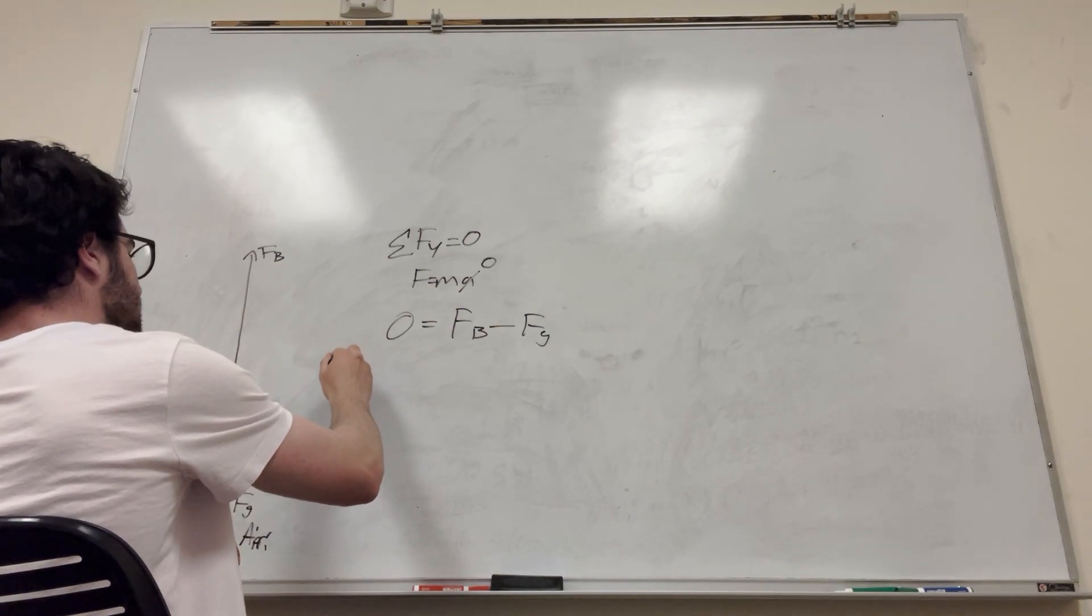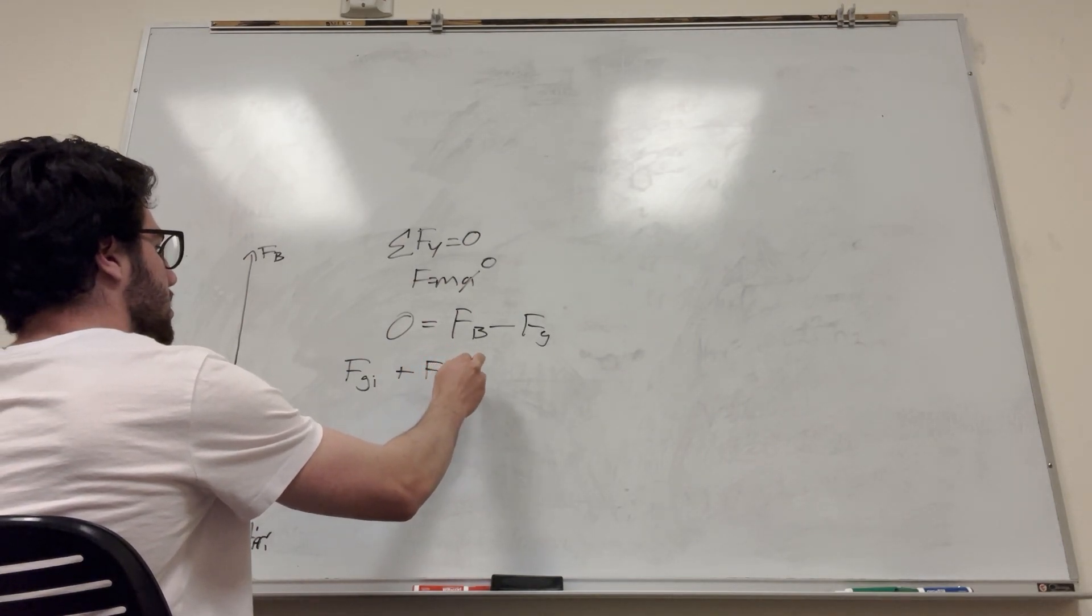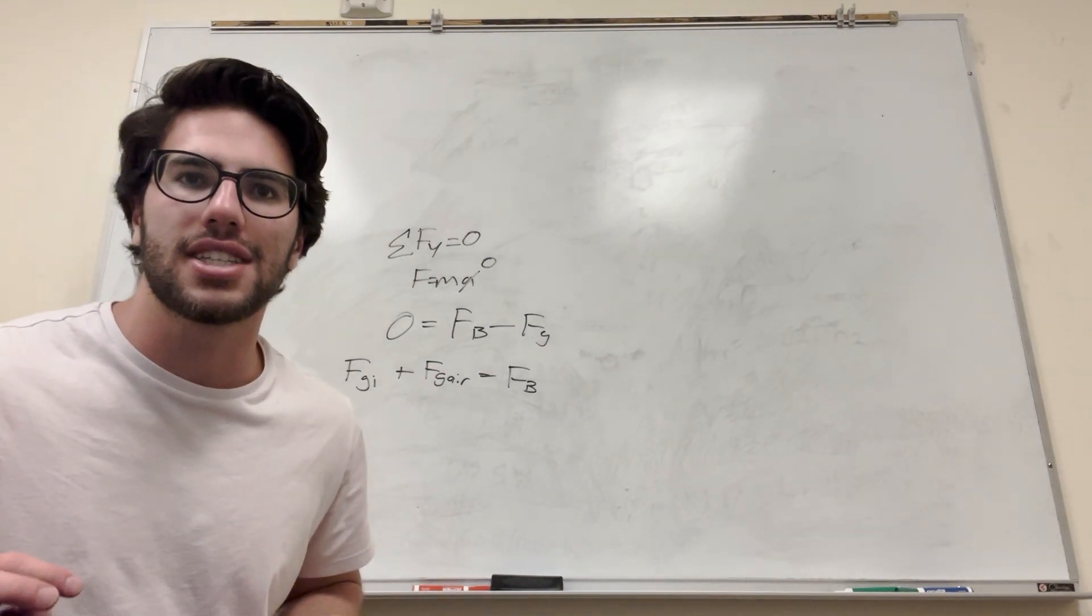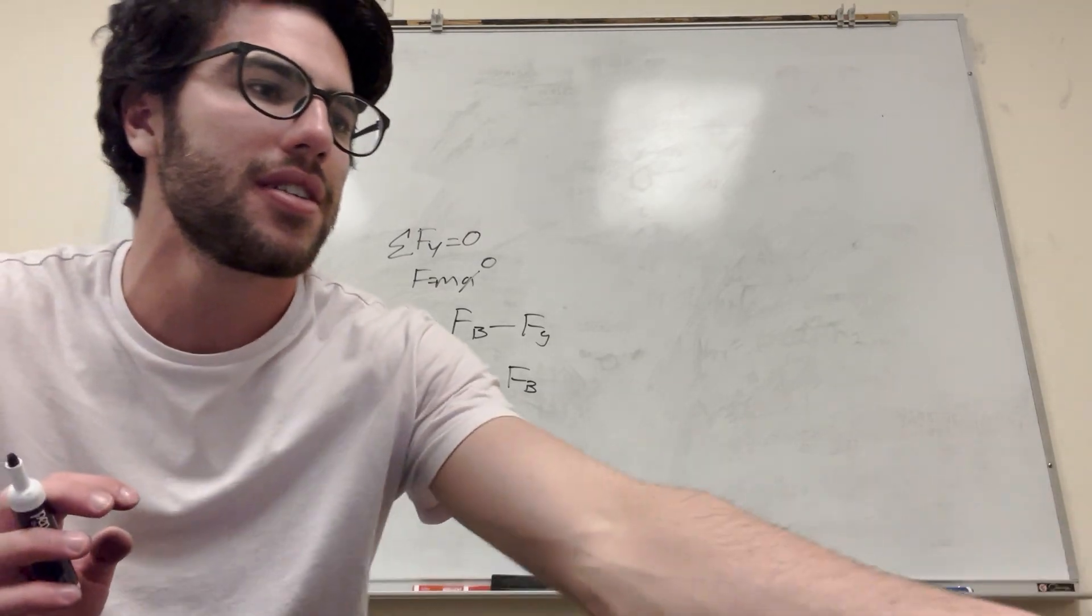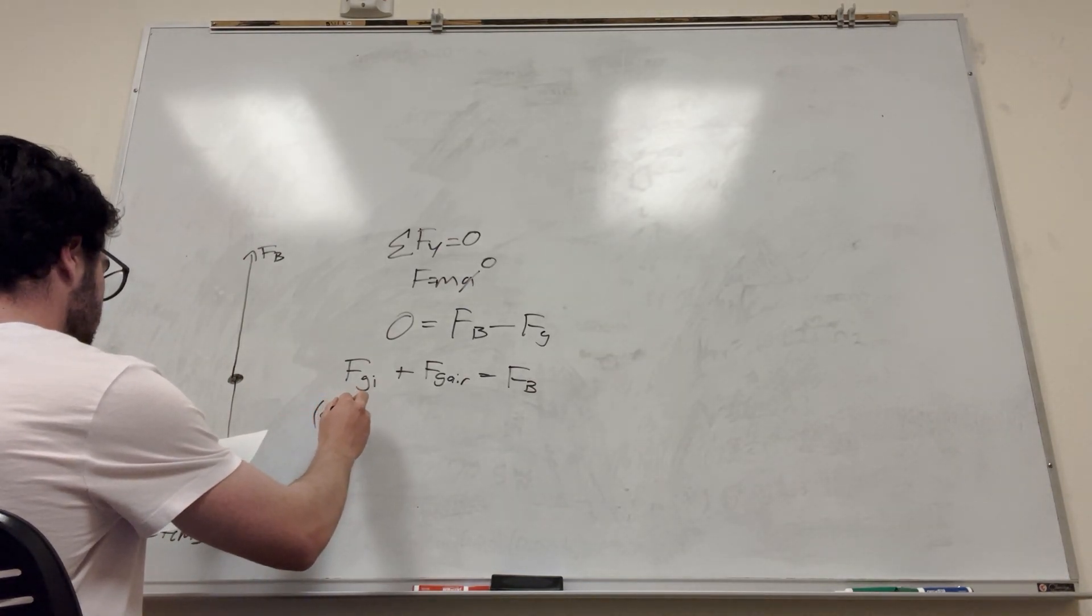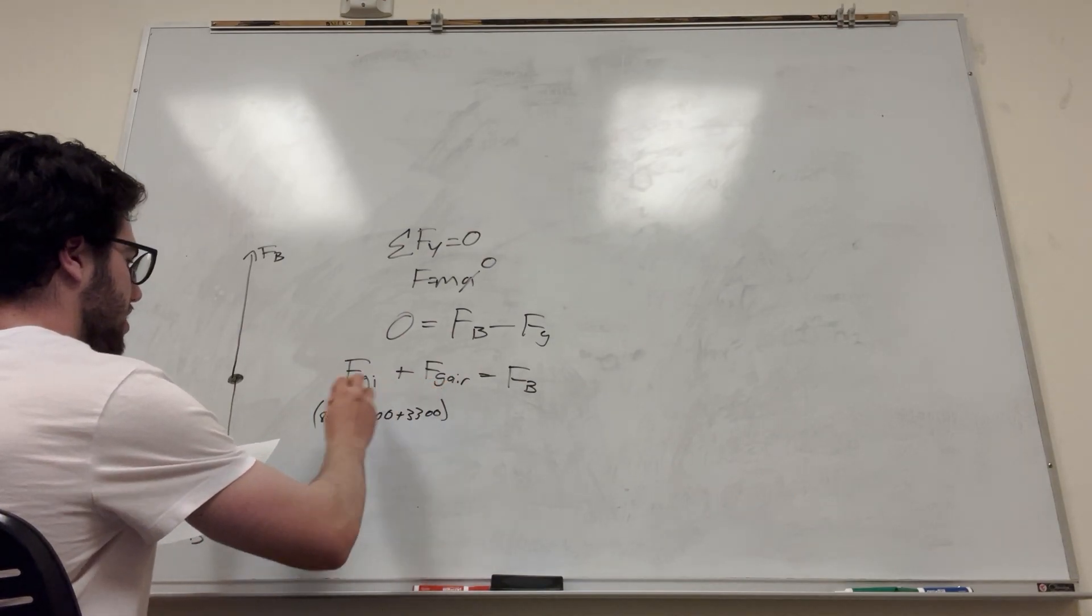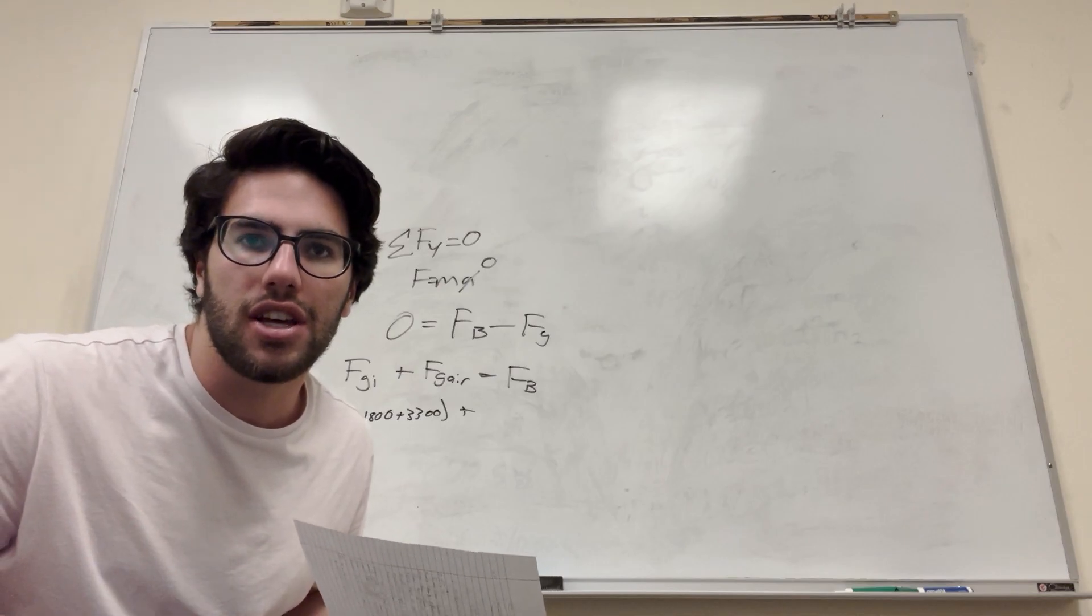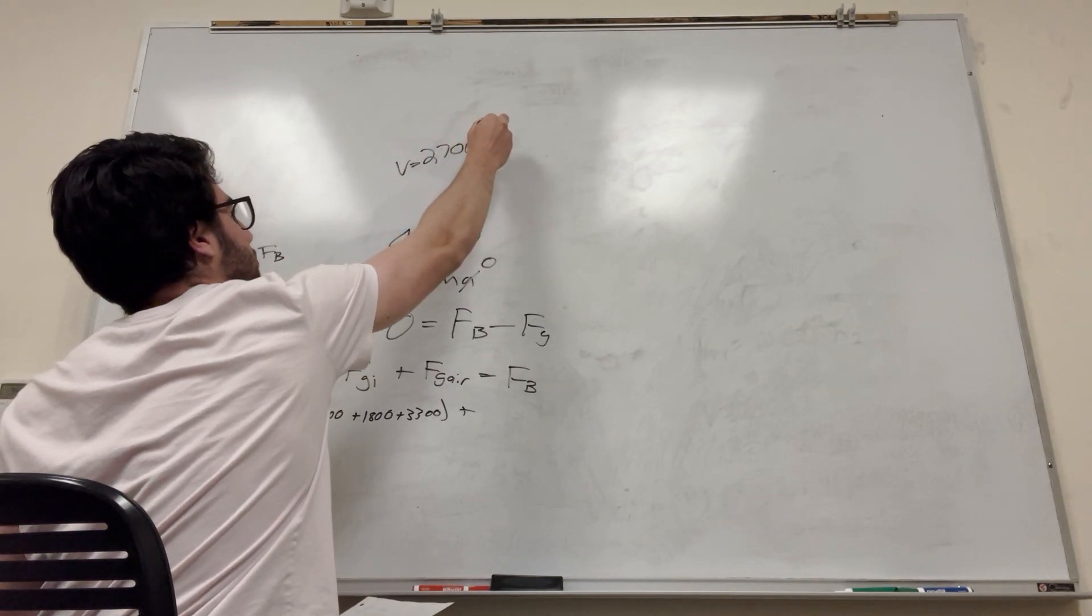So let's write out what we now write. So let's sum out our forces. So it's going to be force of buoyancy minus force of gravity, and that's going to be equal to zero. So we have force of gravity of the items, plus the force of gravity of the air is equal to the force of buoyancy. So let's expand this out some more. So we're given all these masses. So we have 800 plus 1,800 plus 3,300. So that's all the newtons.